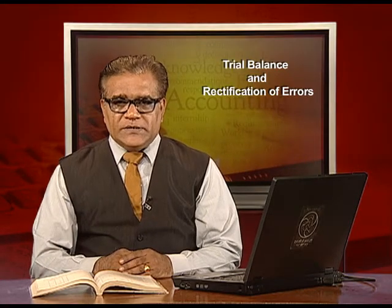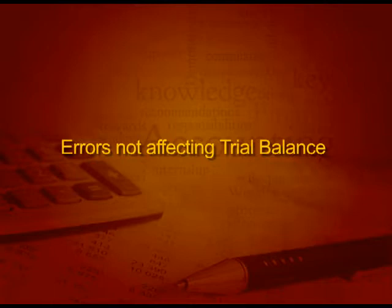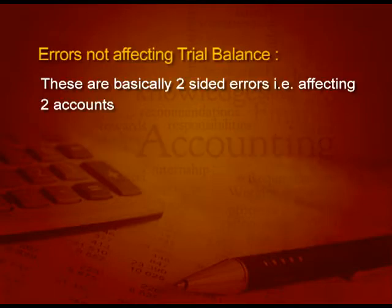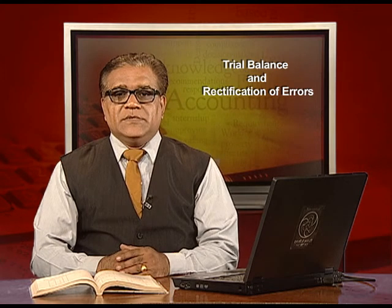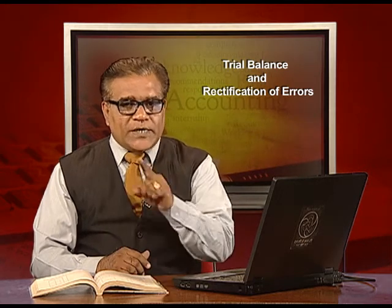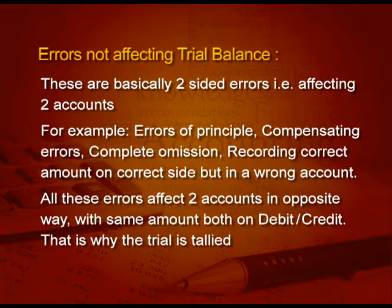Starting with the first one, that is errors not affecting the trial balance. These are basically two-sided errors, affecting two accounts. For example, error of principle, compensating error, complete omission, or recording the correct amount on the correct side but in a wrong account like Ram and Shyam. All these errors affect two accounts in the opposite manner with the same amount, both on debit and credit. That is why the trial balance is always tallied.